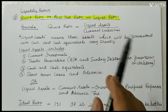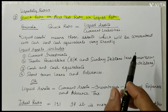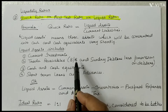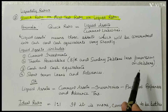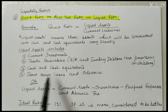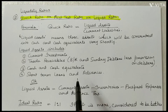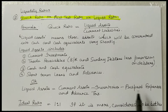Liquid Assets are assets which can be converted into cash or cash equivalents very shortly. Liquid Assets include Current Investments, Receivables — Bills Receivables and Sundry Debtors less Provision for Doubtful Debtors — Cash and Cash Equivalents, and Short Term Loans and Advances. Alternatively, Liquid Assets can be calculated as Current Assets minus Inventories minus Prepaid Expenses minus Advance Tax.